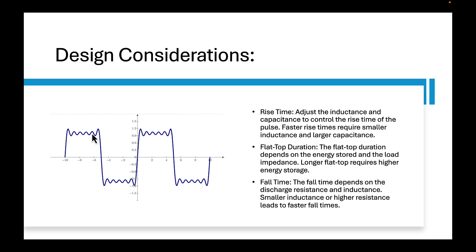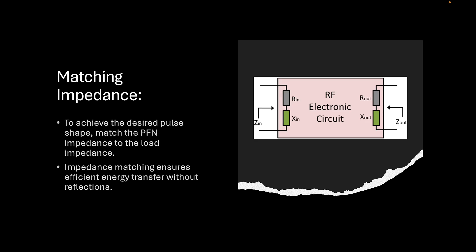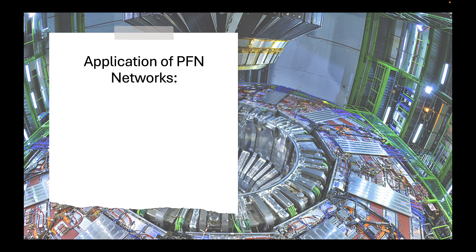However, due to environmental and design factors, this ideal shape is not always achievable. There may be noise and other elements — like aging devices — that could affect the rise time, flat top, and fall time. Impedance matching is used to achieve the desired pulse shape by matching the PFN impedance, ensuring efficient energy transfer without any reflections.